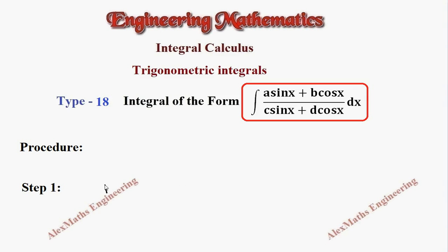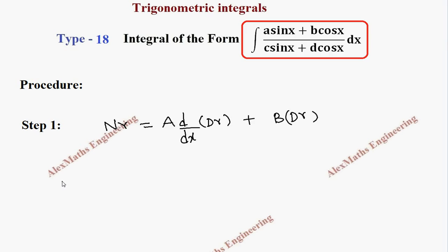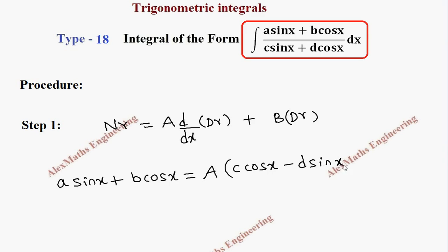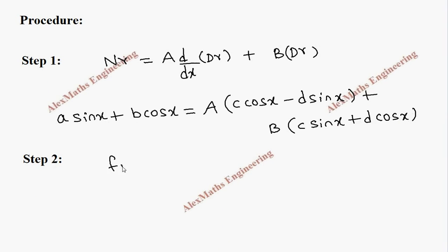As the first step, we take the numerator and write it as capital A times the differentiation of the denominator, plus capital B times the denominator. So we get: a sinx + b cosx = A·(c cosx − d sinx) + B·(c sinx + d cosx).